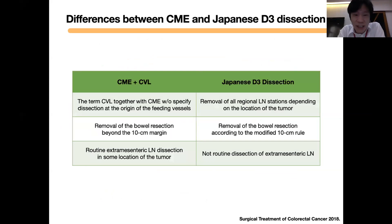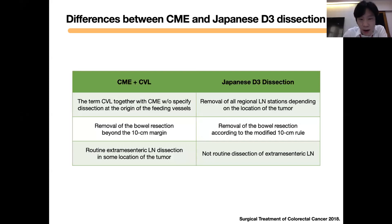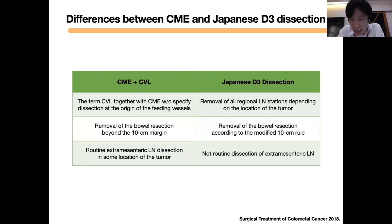Summarizing the differences between CME plus CVL and Japanese D3 dissection: CME and CVL do not specify dissection at the origin of the feeding vessel. The length of bowel removed on the western side would be a 10-centimeter margin, but in the Japanese side they normally do less than 10 centimeters. Routine extra-mesenteric lymph node dissection is not done in the Japanese guideline.